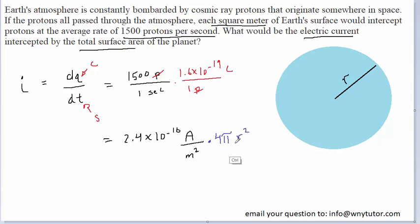The radius of Earth is approximately 6.37 times 10 to the power of 6 meters. So we're going to be plugging that value in for the radius.